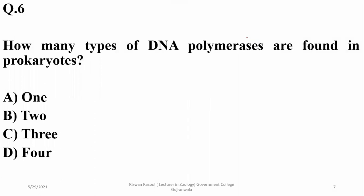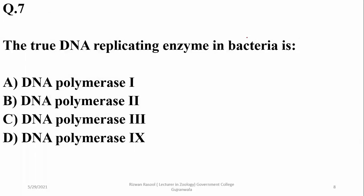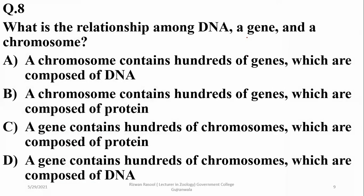How many types of DNA polymerases are found in prokaryotes? There are three types of DNA polymerases performing different functions. The true DNA replicating enzyme in bacteria is DNA polymerase 3, which is the major replicating enzyme. What is the relationship between DNA, a gene, and a chromosome? A chromosome contains hundreds of genes, which are composed of DNA.